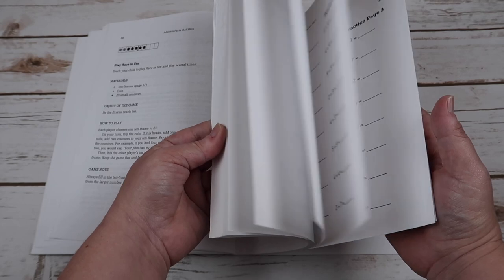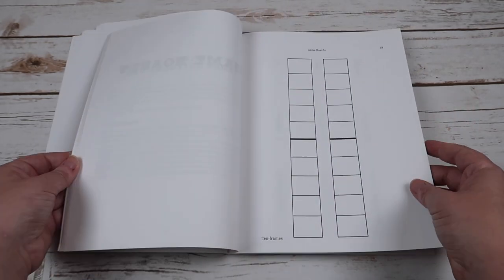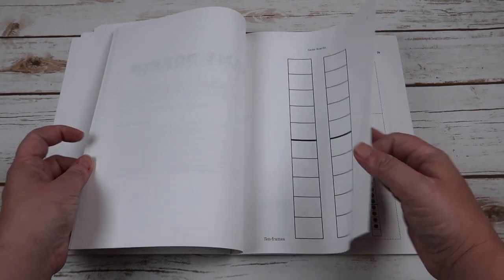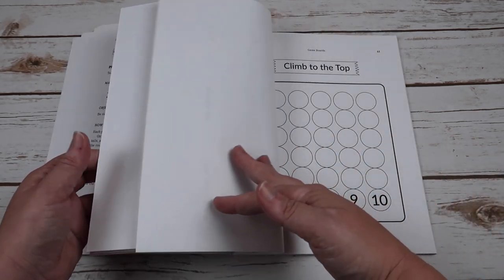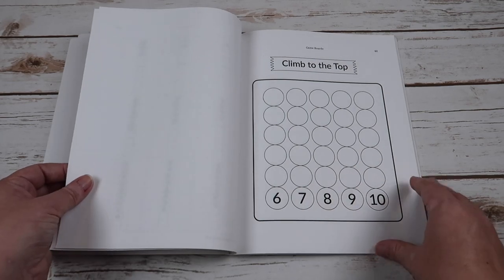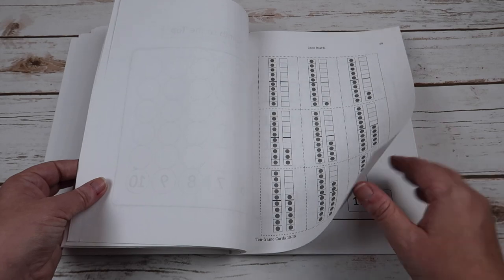I'm going to go ahead and show you back here so you can see the games. So here's the 10 frames. Here's the game boards. Now these pages back here are perforated so they would easily just tear out. So these are some of the different games that you're going to be playing.